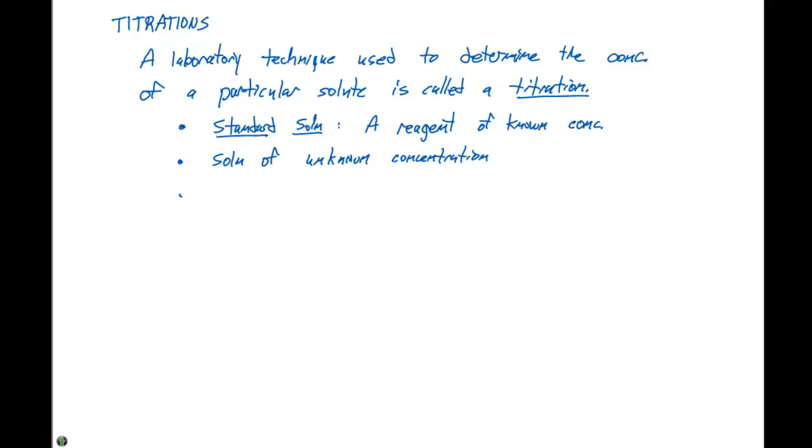The last main component that goes into a titration is something called an indicator. An indicator is a dye that changes color when the equivalence point is reached.